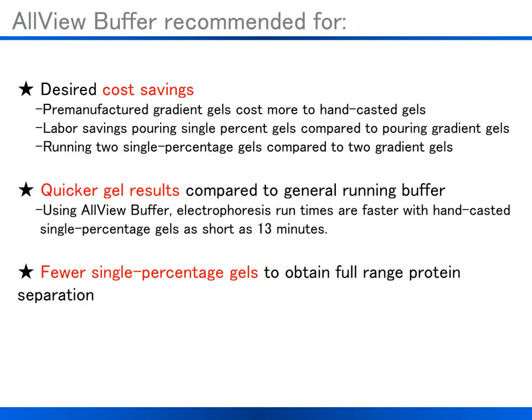AllView Page Buffer is recommended for those desiring cost savings compared to purchasing gradient gels. In general, pre-manufactured gradient gels cost more compared to hand-casted single percentage gels. There are labor cost savings from hand pouring single percentage gels instead of hand pouring gradient gels. Finally, there are cost savings when running two single percentage gels with AllView Buffer in electrophoresis apparatus compared to two gradient gels.